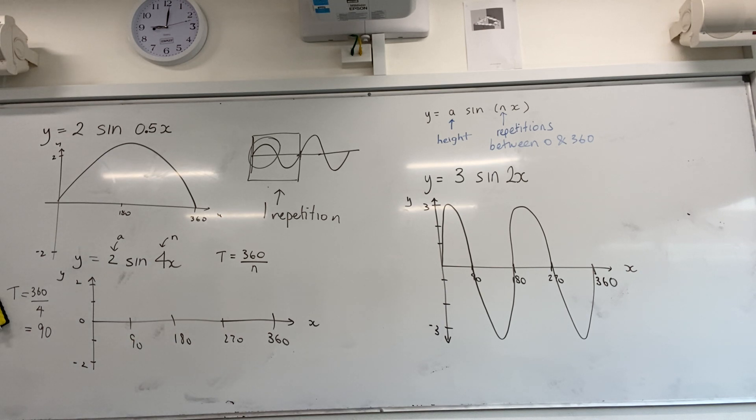Now what does that mean? It means that between 0 and 90 you'll get one full repetition, because the period is how much of x you need for one full repetition. That's where that comes from.